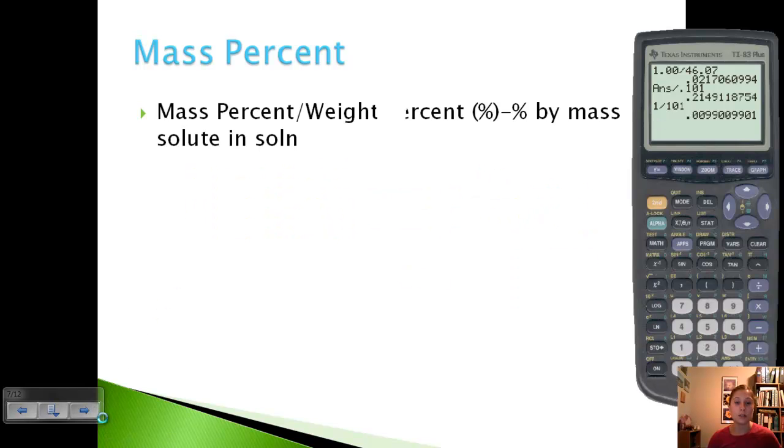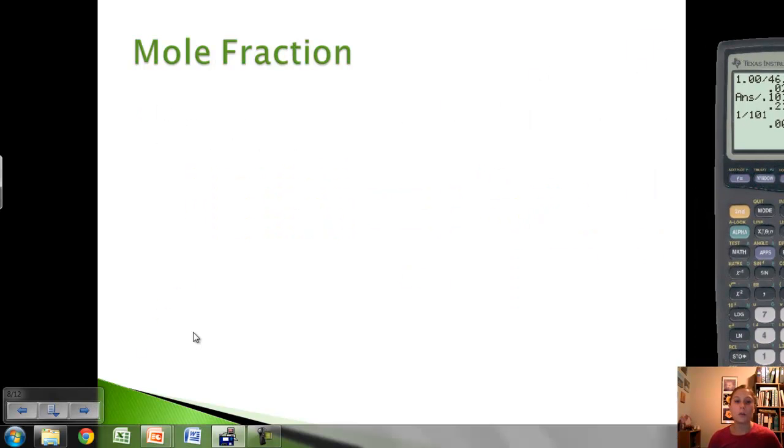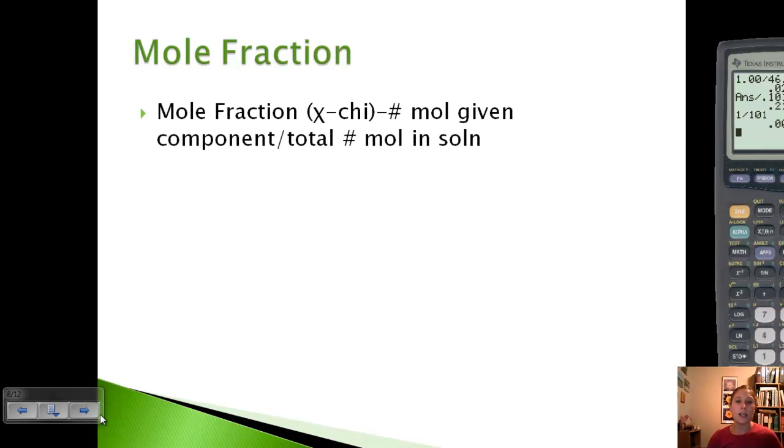Let's look at mole fraction. Mole fraction is the number of moles of the component divided by your total. In this case, our component is ethanol. We have 0.0217 moles of ethanol that go on top. We want the total moles on bottom.